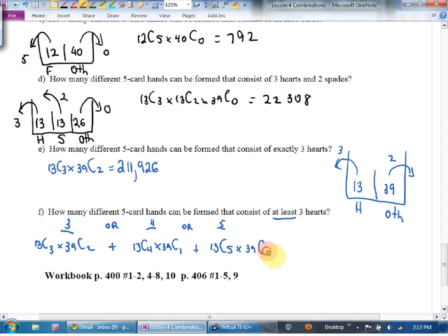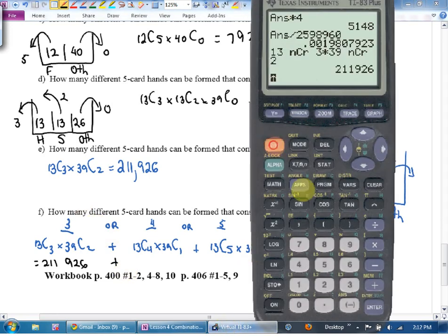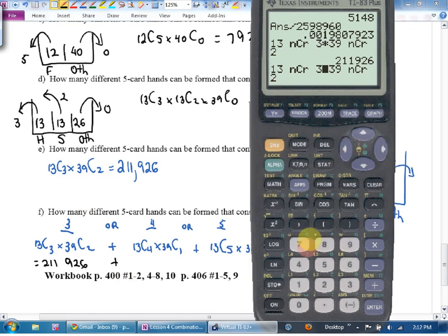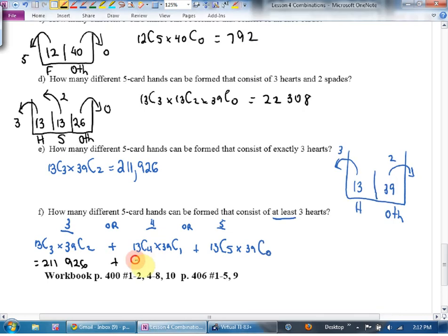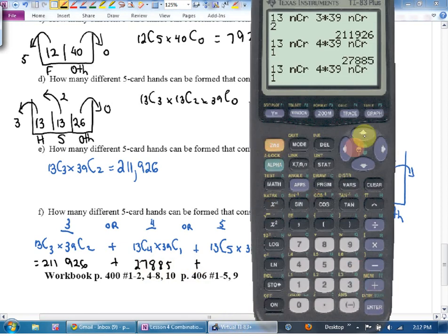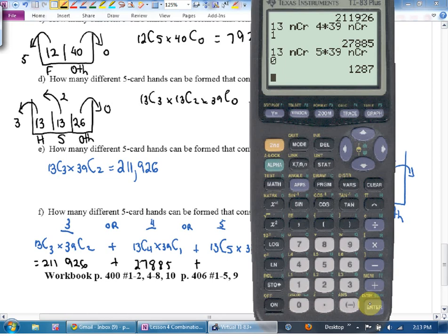Then, to minimize my typing. Now, I've already done this first one. It's two, one, one, nine, two, six. This is where I don't do this all at once. I go case by case, because if I just go second function, enter, I can change the three to a four, and I can change the two to a one. Way less typing. Two, seven, eight, eighty-five. And I go second function, enter again, and this is going to be 13, choose five, and 39, choose zero, and I get 12, eighty-seven, which is the number that we had earlier for the number of ways to get a heart flush. And what am I going to do with these three numbers? Add them up.